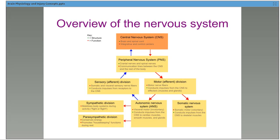The peripheral nervous system is divided into the sensory part and the motor part. Sensory is what we feel, and a lot of that involves pain. The motor division has an autonomic nervous system component and a somatic nervous system component. Then within the autonomic nervous system we have the sympathetic division and the parasympathetic division, which is probably where we focus most when looking at critical care. Of interest, the cranial nerves are in the peripheral nervous system even though they originate in the upper part of the brain.